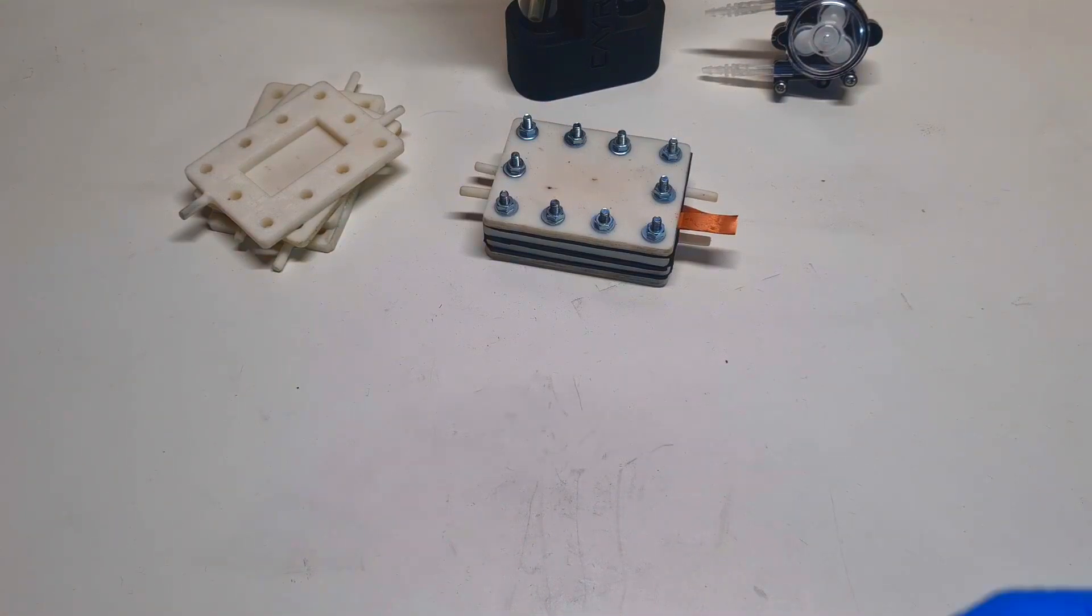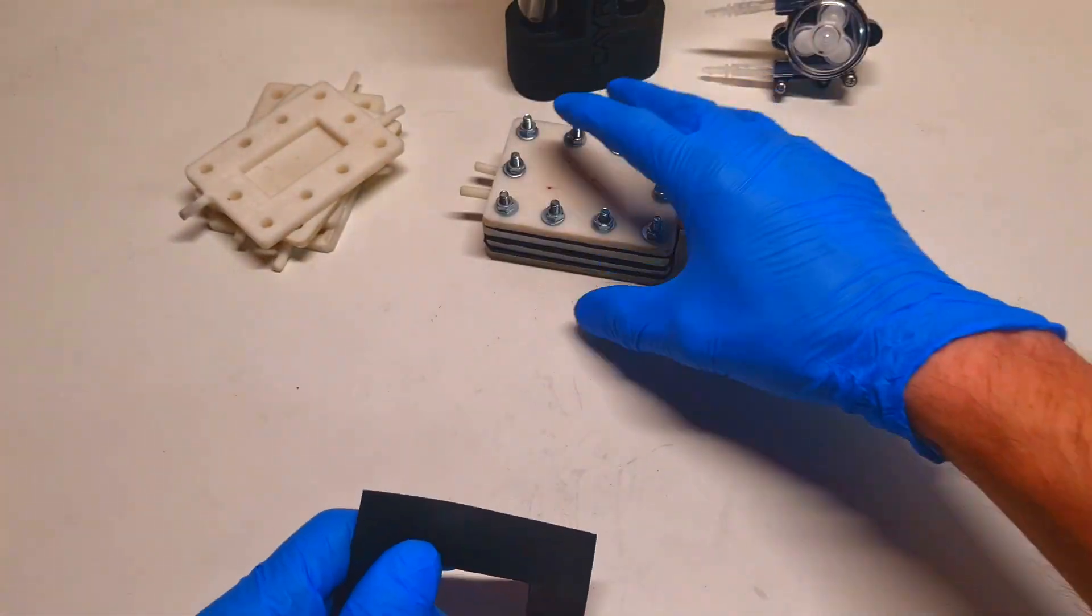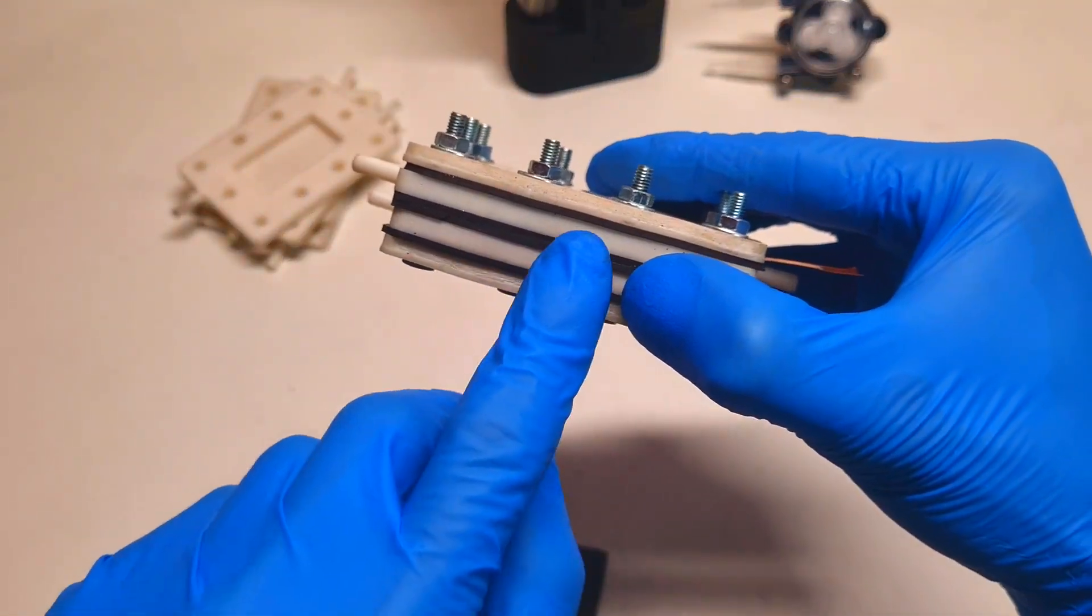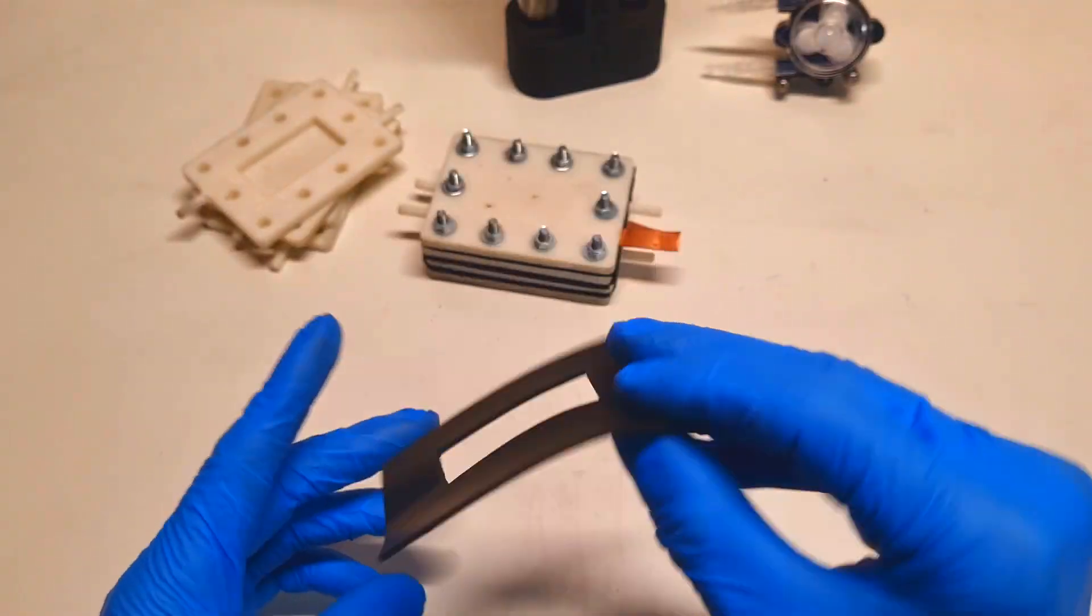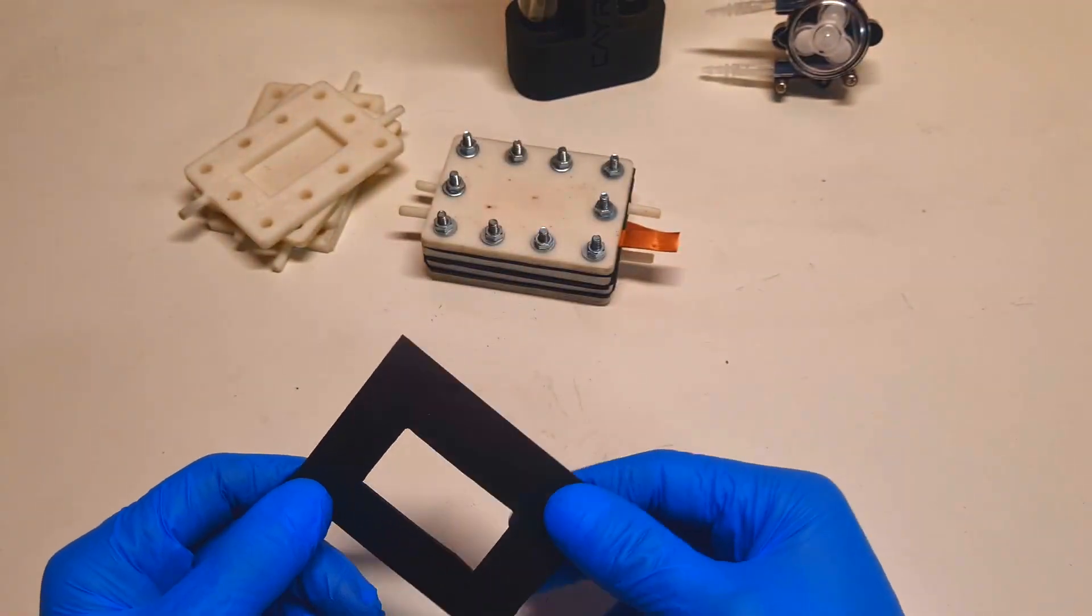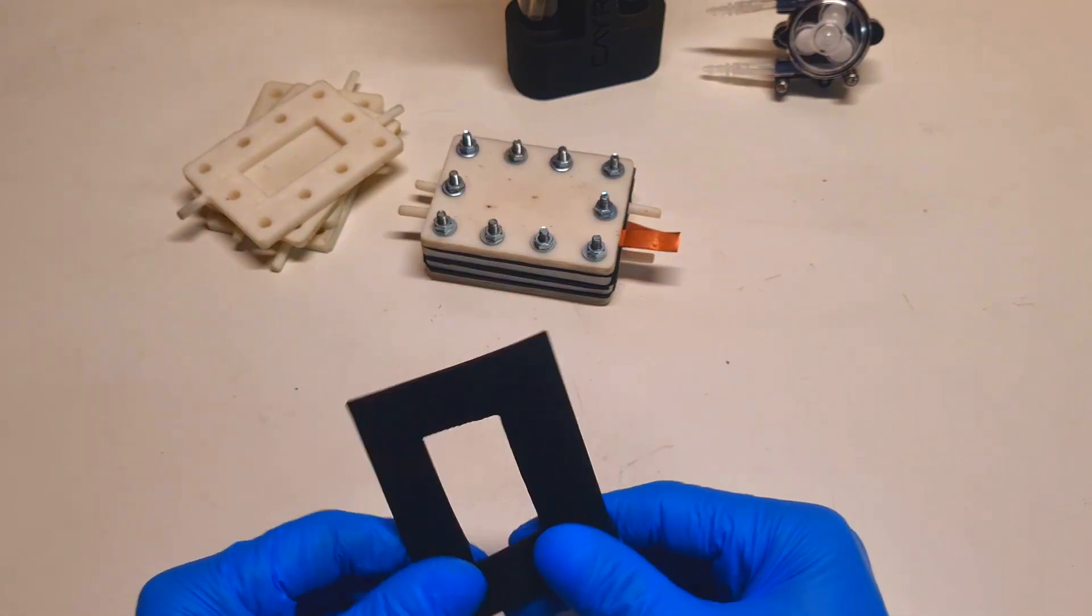For the start, do you remember this one? This is the gasket which I use in this cell. The gasket is made from this neoprene rubber. This neoprene rubber you can actually use for making cell housing.